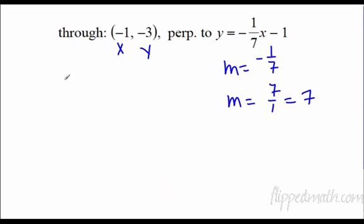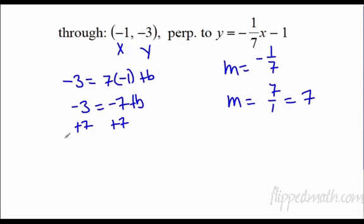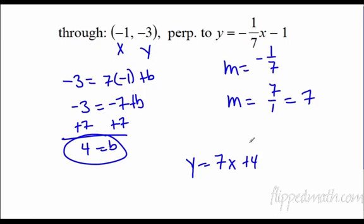So negative 3 equals m times x plus b. Negative 3 equals negative 7 plus b. Add 7. 4 equals b. So y equals 7x plus 4.